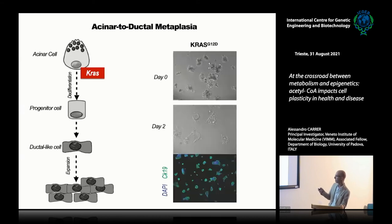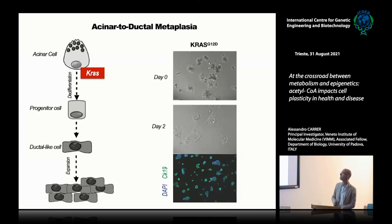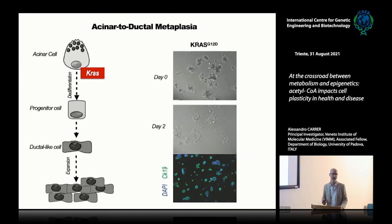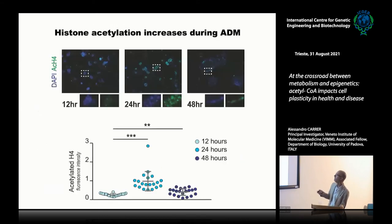ADM can be seen as the initiating step in pancreatic carcinogenesis. Fortunately, this can be modeled ex vivo. KRAS-expressing acinar cells are placed in a 3D matrix where you can recognize the classic grape-like organization, but only after a couple of days in culture they completely lose this acinar morphology and acquire a more ductal-like appearance. They even start to express ductal-specific markers like cytokeratin 19. We looked at what happens during ex vivo ADM and observed a timely increase in histone acetylation that peaks at 24 hours.